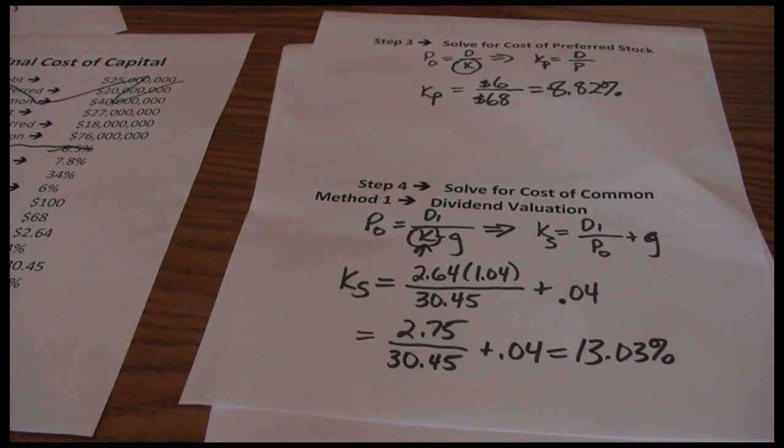The problem is this is based on the constant growth model. The constant growth model assumes dividends are going to grow at the same percentage rate every year forever. For most companies that's not a realistic assumption. That's going to introduce some error. So this is an approximation. The approximation is better for companies with stable growth rates. It's worse for companies with volatile growth rates.